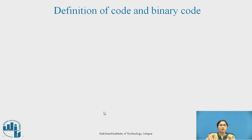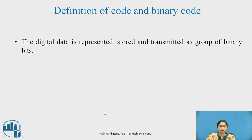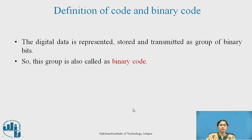Definition of Code and Binary Code. Digital data is represented, stored, and transmitted as a group of binary bits. This group is also called a binary code. A binary code consists of 0s and 1s.